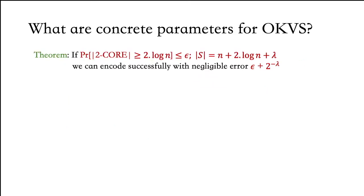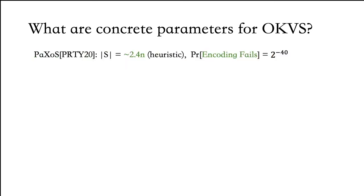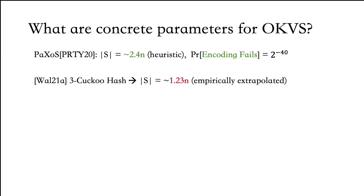One of our main motivations for this paper is that it is non-trivial to translate this asymptotic analysis into concrete parameters while instantiating PSI. In Paxos, to encode n items with negligible error, they pick a binary OKVS with size 2.4n. Using the analysis of cuckoo hashing with three hash functions, we can heuristically determine that to encode n items, we need around 1.23n bins.